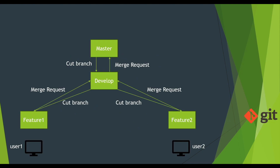Let us understand it from the diagram first. We have the master branch, which is the topmost, most reliable, and most stable branch, and we are intentionally making it protected so we cannot directly push changes to master. We have develop, which is again protected and is an exact replica of master. When the sprint starts, with a two-member team — user one and user two — user one automates the login feature and user two automates the dashboard feature. They each create a branch out of develop using the convention feature slash feature-name, e.g., feature/login and feature/dashboard.